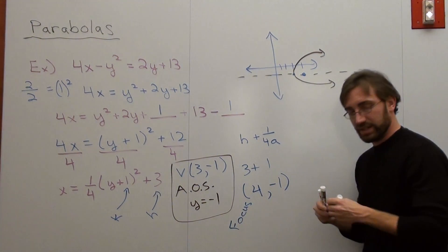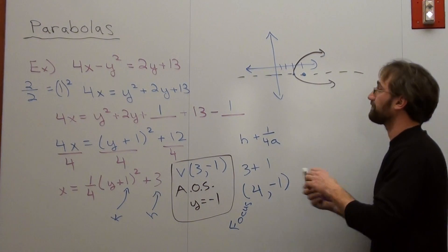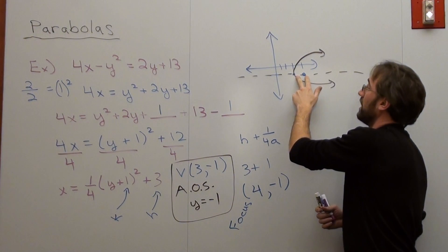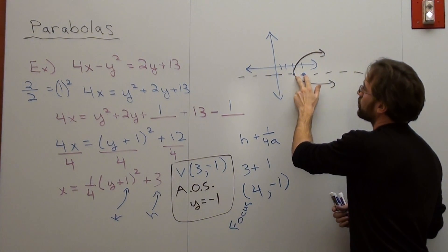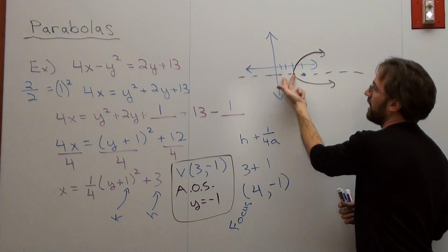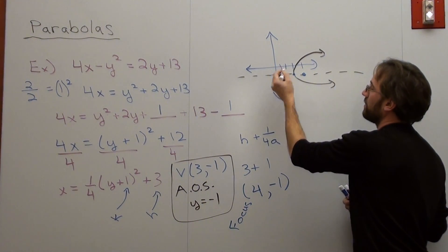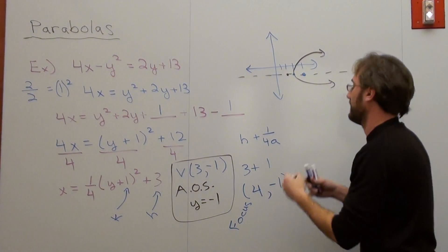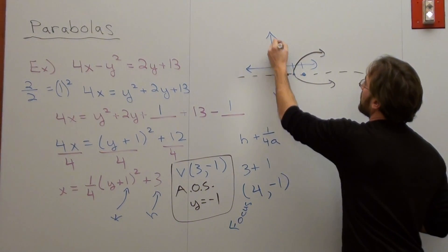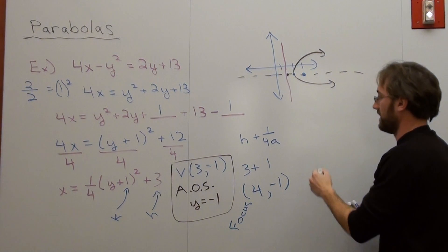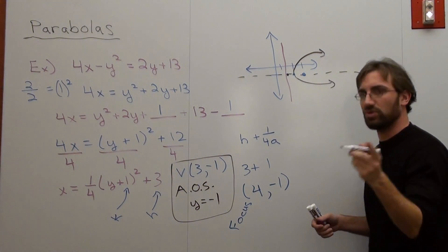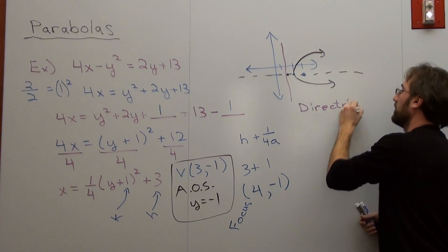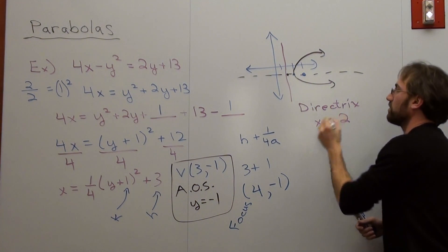Now my directrix is the same distance. It's equal distance opposite from the focus to the vertex of the parabola. So this was one spot away. So it better be one spot away this way. So it's right here. It's (2, -1). So it's not a point, though. It's a line. It's a straight line that looks like this. So in this case, my directrix is at the line x equals 2.